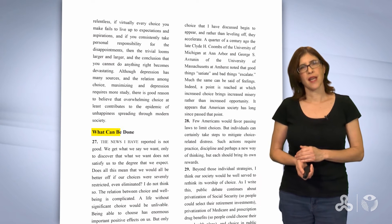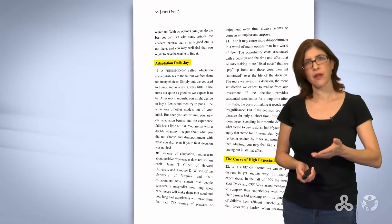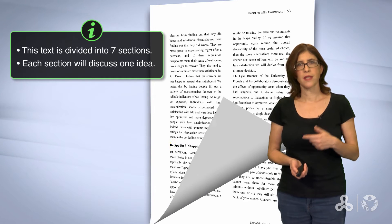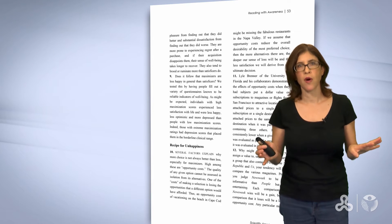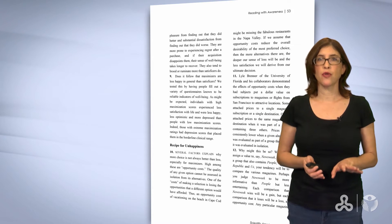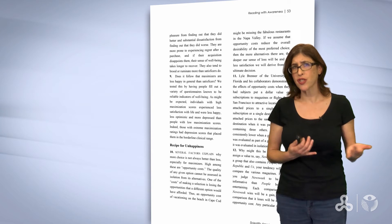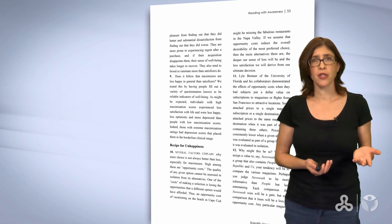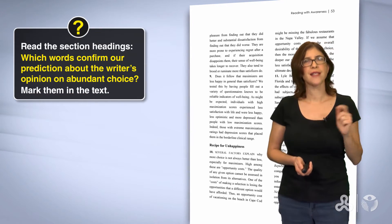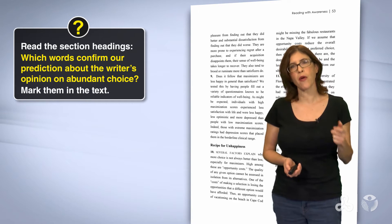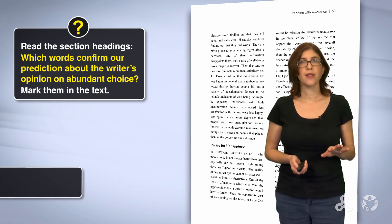Other eye-catching features we have in this text are section headings. Remember, they divide the text into sections. Here the text is divided into seven sections, and each section will discuss one idea. From the eye-catching features we have seen so far, we can say that the writer will say negative things about too much choice. Can we confirm our prediction with the section headings? Read the section headings and mark the word or words that confirm our prediction about the writer's opinion of abundant choice. Press pause and come back when you're done.